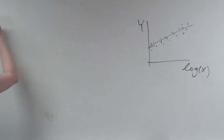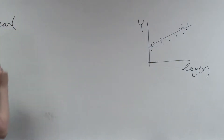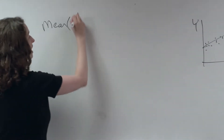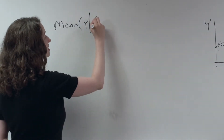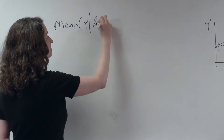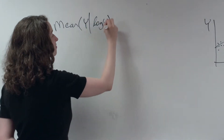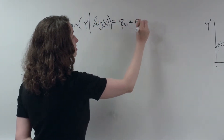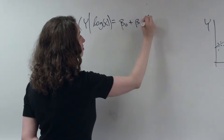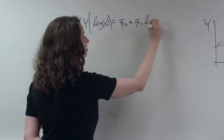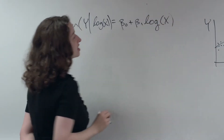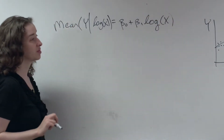So, what is the equation for this particular model? We're saying the mean of y given the log of x is equal to some intercept plus some slope times the log of x. That's what we're beginning with.